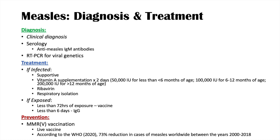With regards to prevention, vaccination is very key — we can use the MMR or MMRV vaccinations for measles, mumps, rubella, and varicella. This is a live vaccine, so do not use it when a patient is pregnant or immunocompromised. Vaccinations have been shown to be very helpful in reducing the rates of measles infections and ultimately reducing the devastating complications of measles.